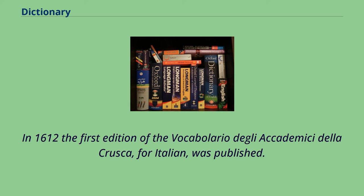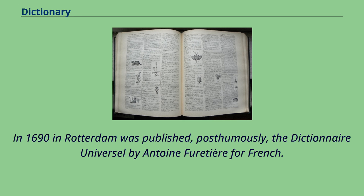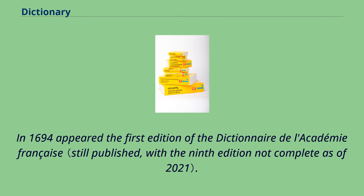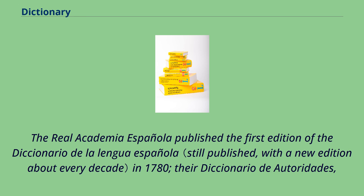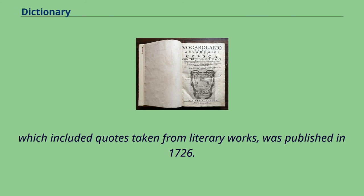It served as the model for similar works in French and English. In 1690, in Rotterdam was published, posthumously, the Dictionnaire Universel by Antoine Furetière for French. In 1694 appeared the first edition of the Dictionnaire de l'Académie Française. Between 1712 and 1721 was published the Vocabulario Português e Latino written by Raphael Bluteau. The Real Academia Española published the Diccionario de la Lengua Española; their Diccionario de Autoridades, which included quotes taken from literary works, was published in 1726.